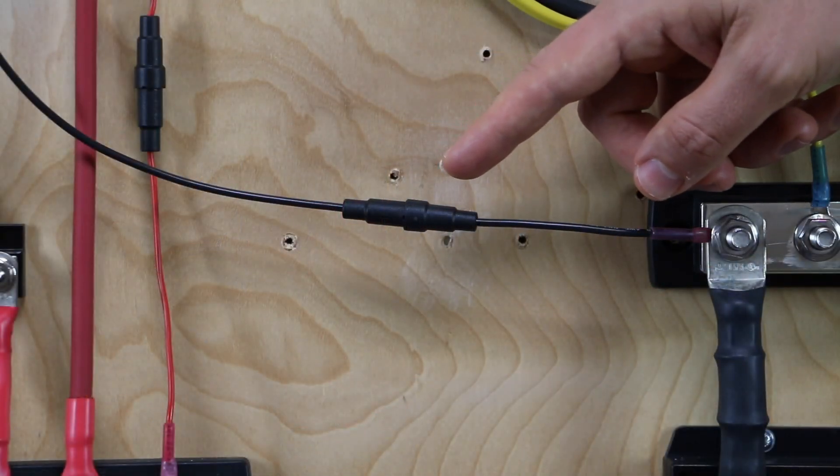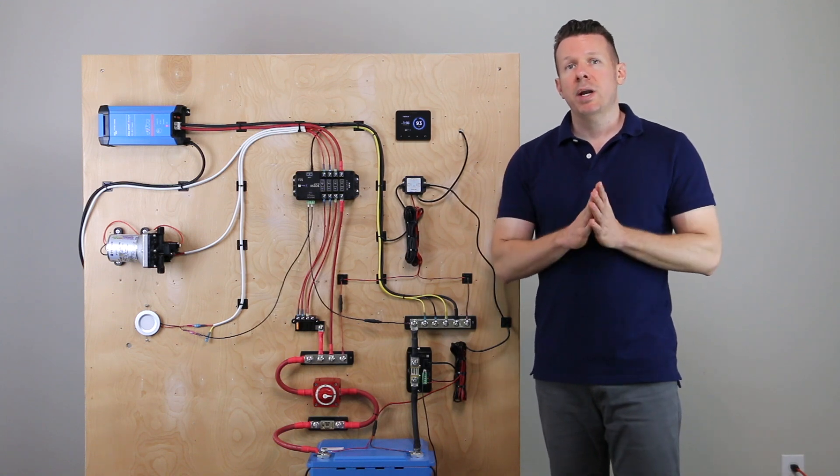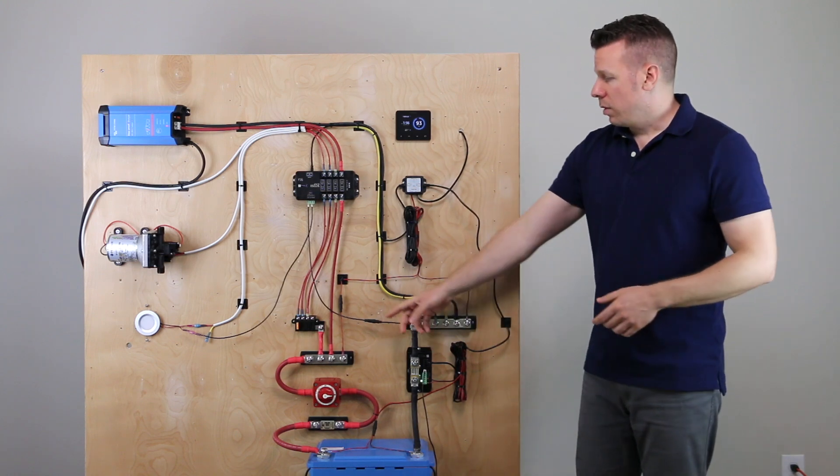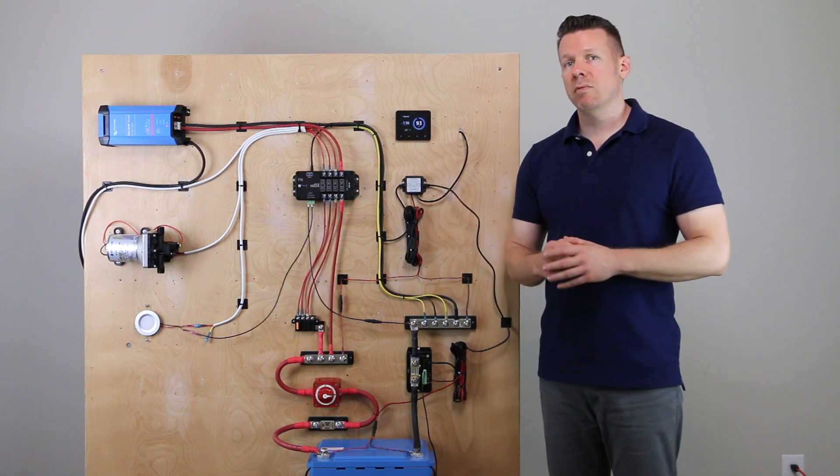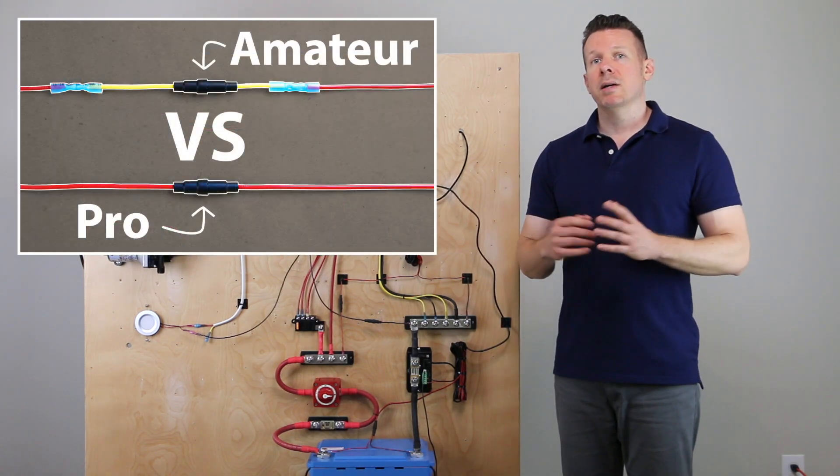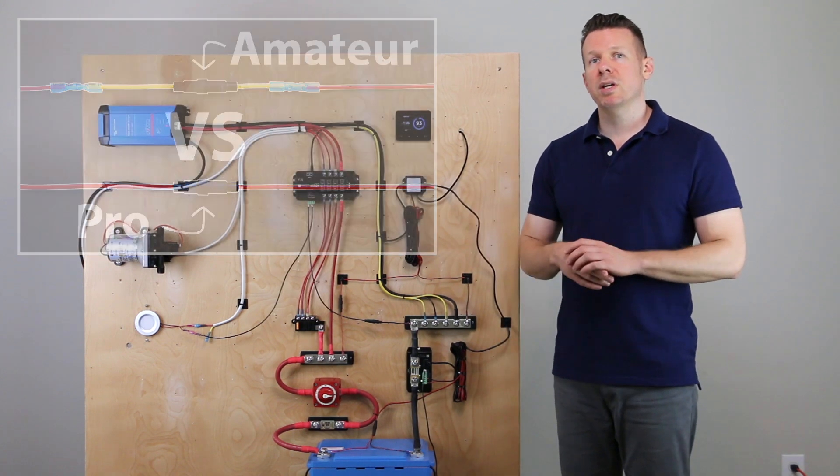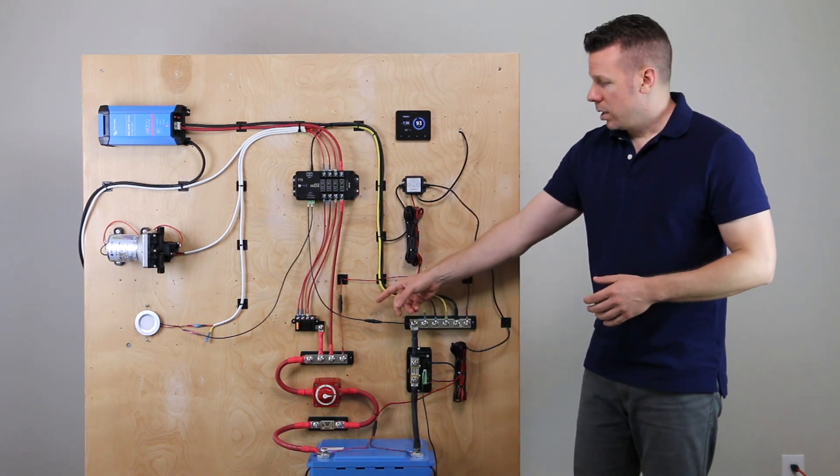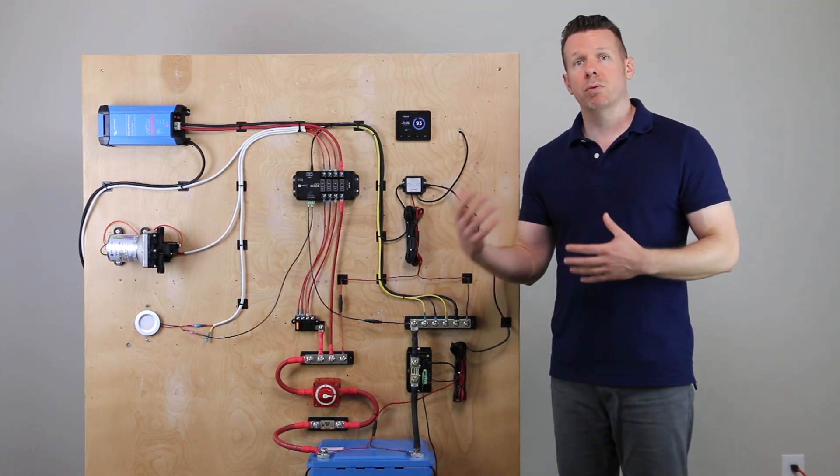Now I wanted to mention, I did add a little inline fuse to our negative line running up to the relay with a one amp fuse in it. It's a five by 20 millimeter fuse. If you want to find out how to add those fuse holders to any positive or negative wire, I did a video on that a few weeks back. That fuse is going to protect that relay and make sure we don't send more than one amp of current through it.